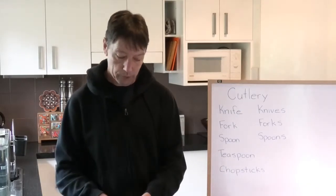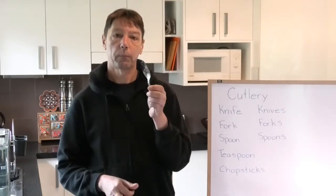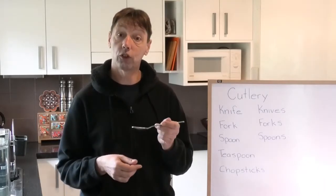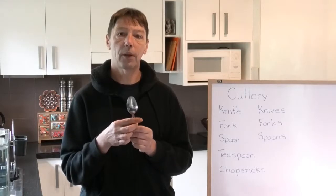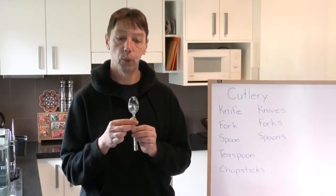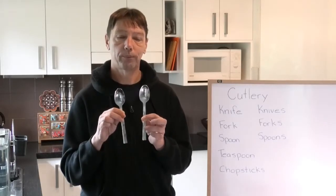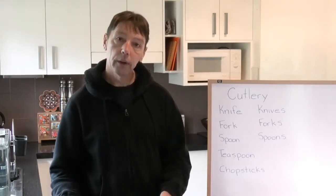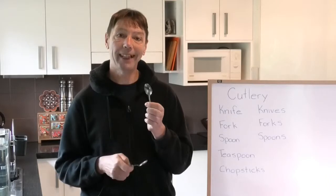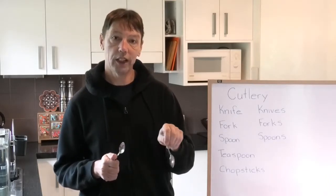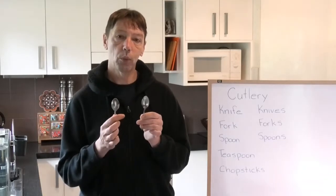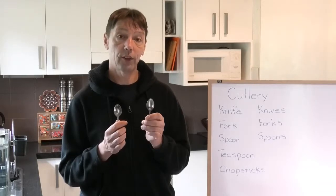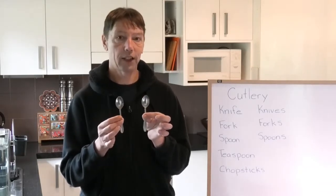Then we have a spoon — for desserts, or a spoon for soup, a soup spoon. Spoon: S-P-O-O-N. More than one: spoons — just put an S on the end. And a small spoon is called a teaspoon, for stirring your tea or your coffee. Teaspoon — one word: T-E-A-S-P-O-O-N. More than one: teaspoons.